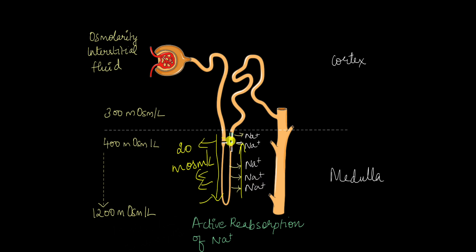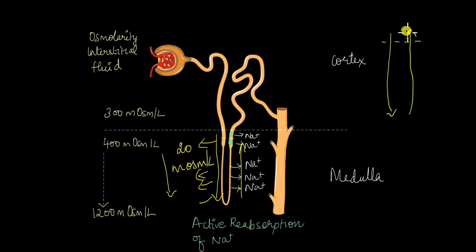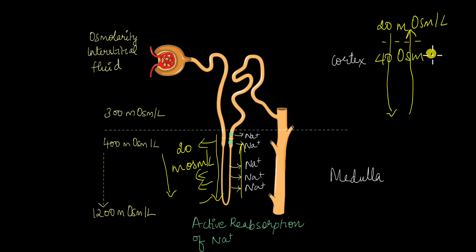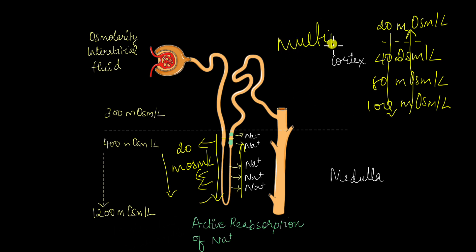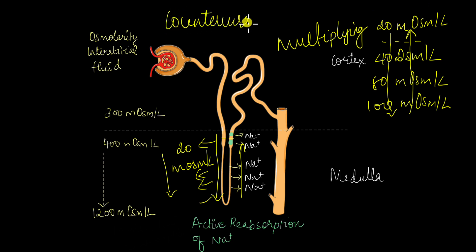The difference in the concentration gradient — the difference in their osmolarities — keeps on increasing. Initially the difference is around 20, but as more and more fluid gets pushed down, the difference increases, meaning there is more of a concentration gradient. It increases to 40, then to 80, then to 100, perhaps. So literally the concentration is multiplying in the ascending and descending limbs of the loop of Henle, which is why this entire mechanism by which the reabsorption of water is facilitated at the loop of Henle is known as counter-current multiplication.